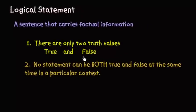The second assumption is that no statement can be both true and false at the same time. So a statement is going to have to be true or false in a particular context — meaning true in this context or false in whatever scenario you're talking about. That's what we mean by particular context.